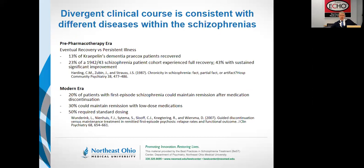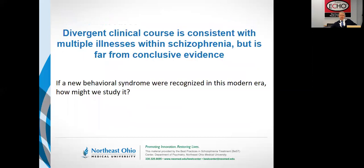Manfred Bleuler also found that another 40% had very significant improvement to the point that they could have meaningful work and meaningful relationships outside the hospital. In modern times, about 20% of individuals can ultimately become medicine-free and do quite well. Another 30% or so will require extraordinarily low doses of medications, and about half will require standard dosing. There you have a signature from nature that what we call schizophrenia is perhaps many different diseases — or at least three different diseases.